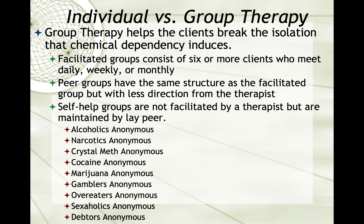If you watch the show 'Mom,' the mother and the daughter are both alcoholics and the daughter has a gambling problem. It's a comedy, and of course it is run by people in the group, not by a therapist. Alcoholics Anonymous is one type of self-help group. Others include Narcotics Anonymous, Crystal Meth Anonymous, Cocaine Anonymous, Marijuana Anonymous, Gamblers Anonymous, Overeaters Anonymous, Sexaholics Anonymous, and Debtors Anonymous.